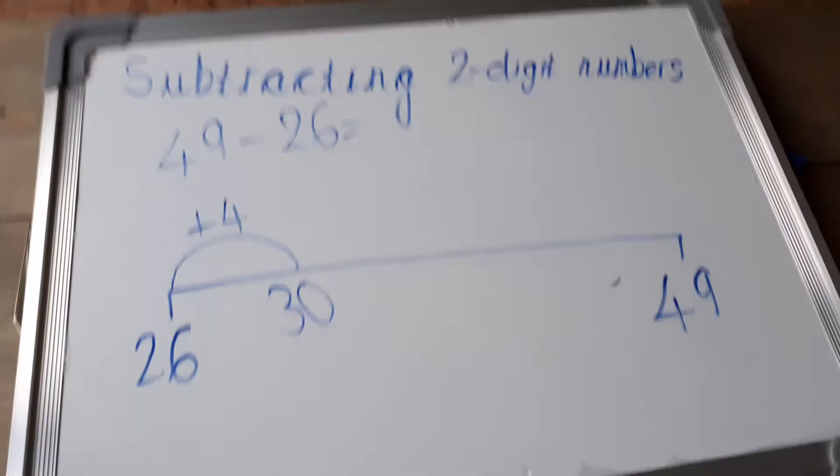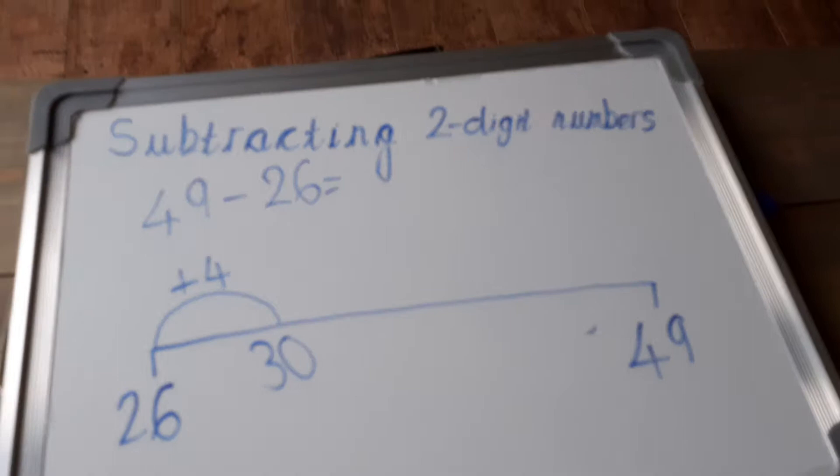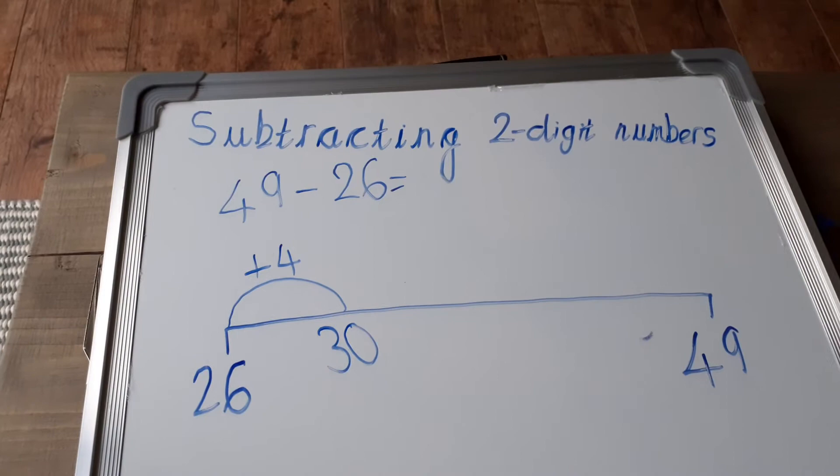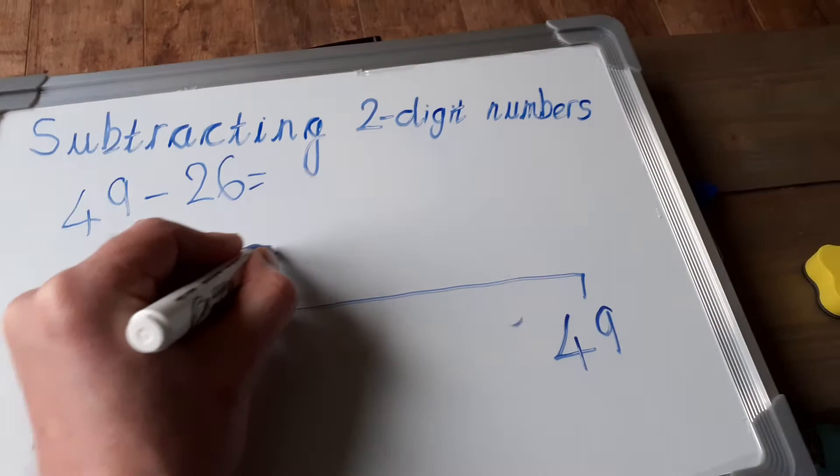We could jump now from 30 to our next multiple of 10, which is 40, isn't it? So we need to add another 10 to get from 30 to 40. So let's jump from there to there. We've added another 10, and now we're on 40.